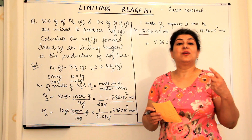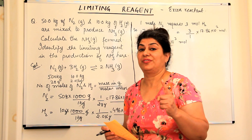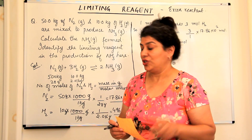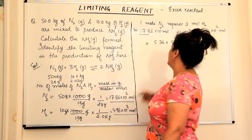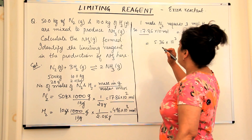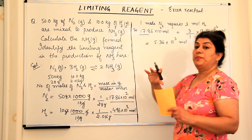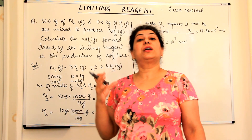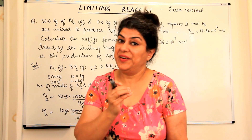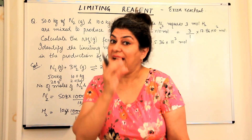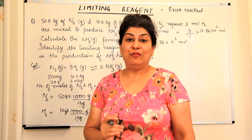Which reactant are we running short of? We are running short of hydrogen. Therefore, hydrogen is the limiting reagent. Once we know hydrogen is the limiting reagent, the amount of product formed depends on it — that quantity determines how much product will be formed.